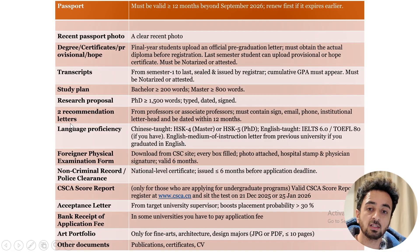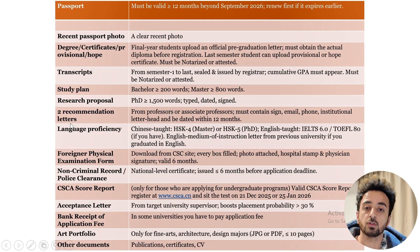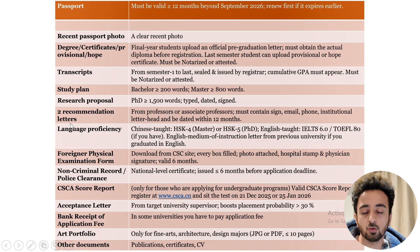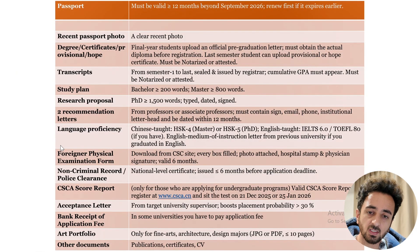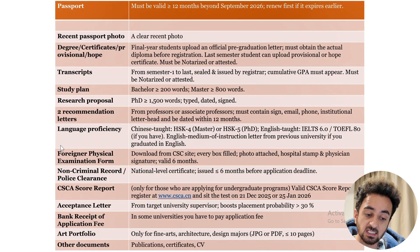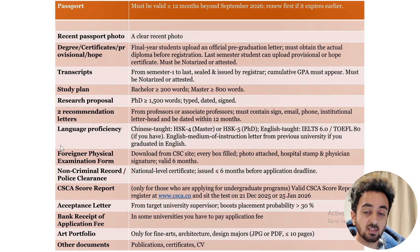For the non-criminal record or police clearance, go to the police station near your home and explain that you are going abroad to study. Ask for a non-criminal record or police character certificate. They will provide it easily, and then you can submit this document.